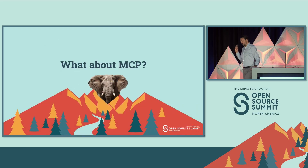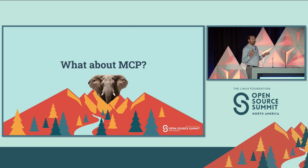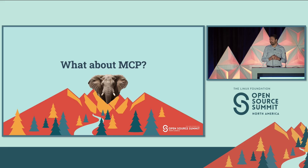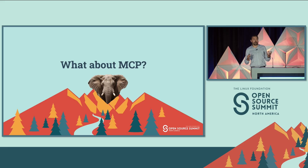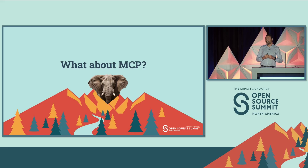I want to address what some might consider the elephant in the room. We have this problem: we need to connect agents together. A very reasonable question to ask is — is there already a protocol out there that could solve this problem? Right now, when you say 'agents and protocol' together, people think model context protocol — MCP. So does MCP work for this?